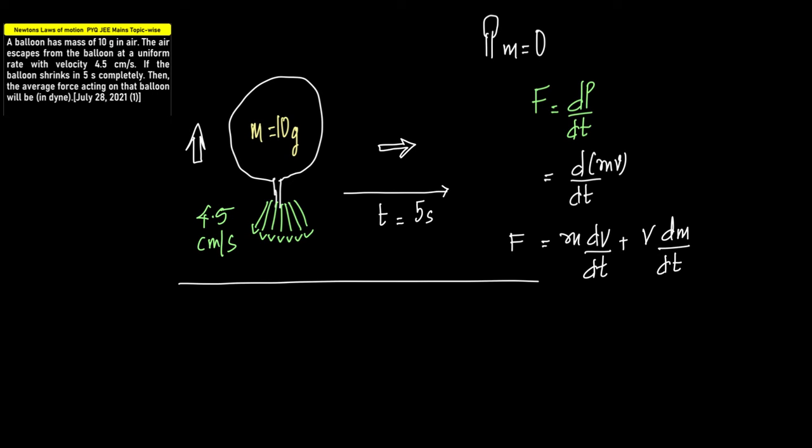From this question, it is given that the velocity is 4.5 centimeters per second, which means velocity is a constant. When velocity is a constant, dv/dt equals zero. Therefore, this term vanishes.